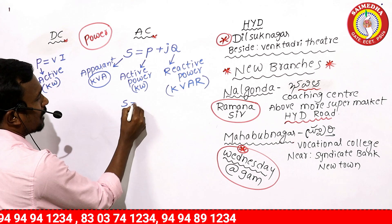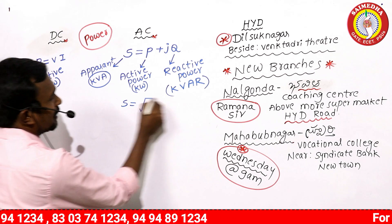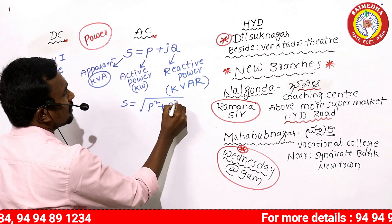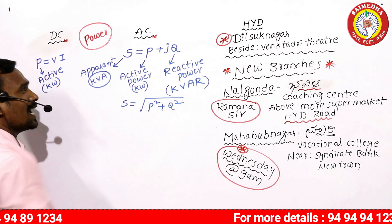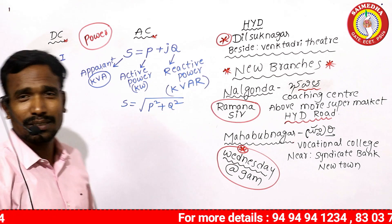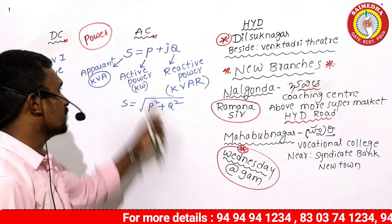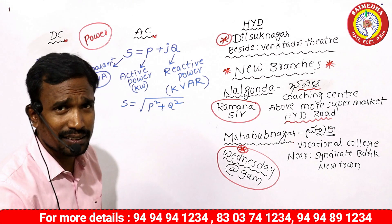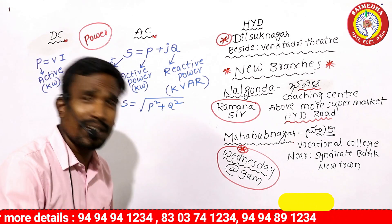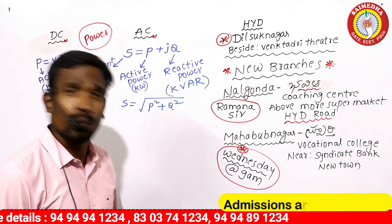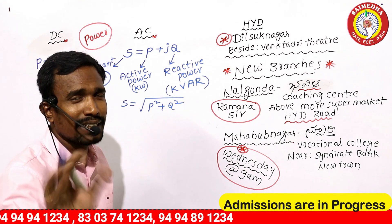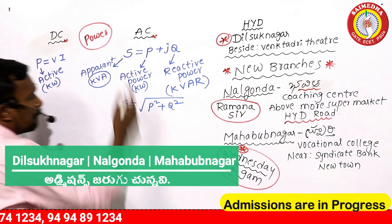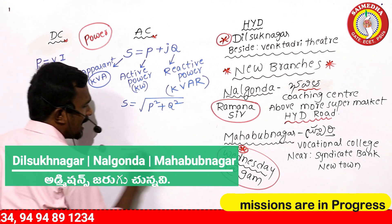S is apparent power, equals to square root of P squared plus Q squared. We have single phase AC and three phase AC formulas — VI cos φ and root 3 VI cos φ respectively. We have a class that will explain these to you.